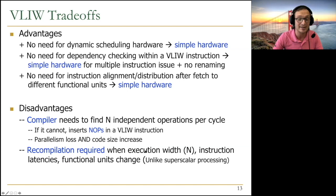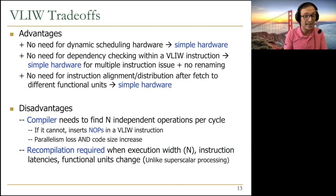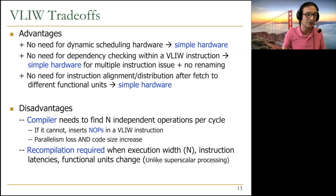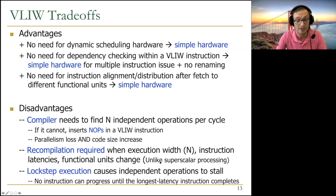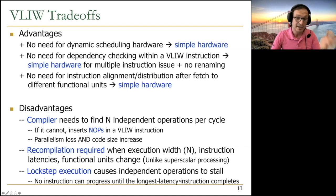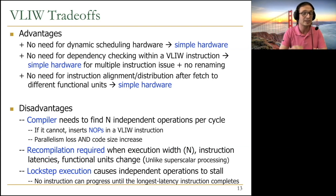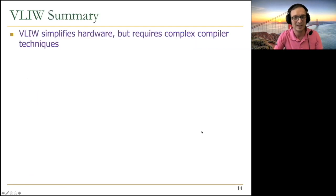Another disadvantage: whenever you change execution with instruction latencies or functional units — anything affecting scheduling — you must recompile code. Going from a 7-wide to a 28-wide VLIW machine requires full recompilation, unlike superscalar out-of-order processors where microarchitecture changes don't require recompilation. Lockstep execution also forces all independent operations to stall waiting for the longest-latency instruction, and while the compiler can try to balance latencies across concurrent instructions, this is a very difficult task.